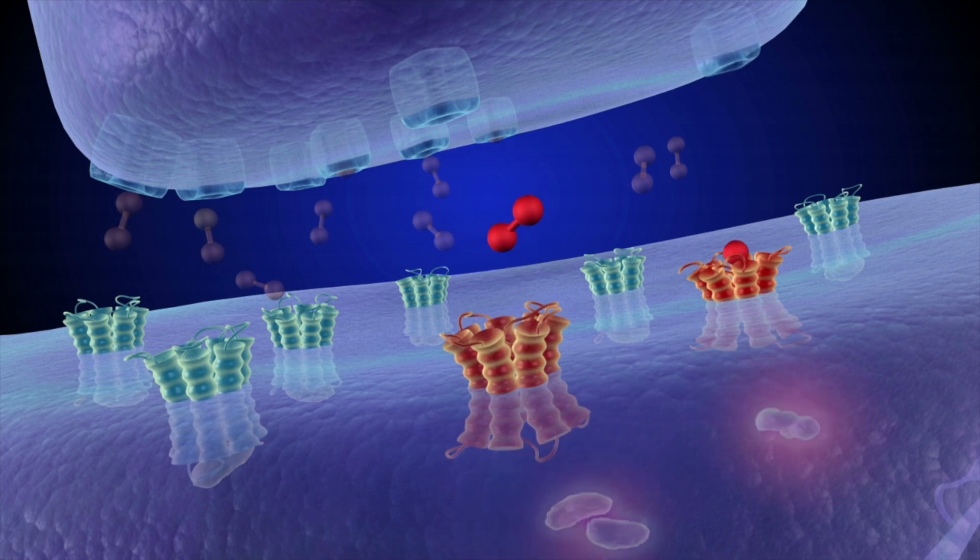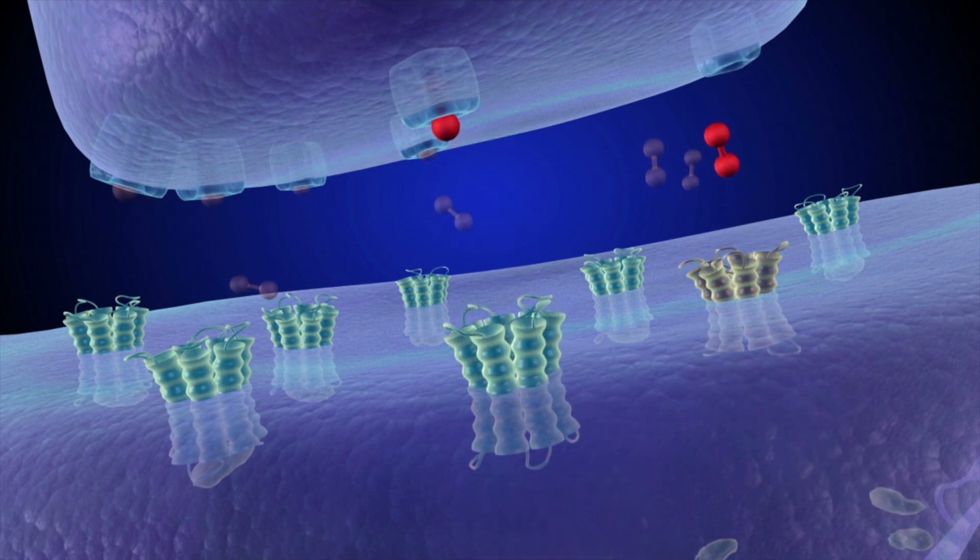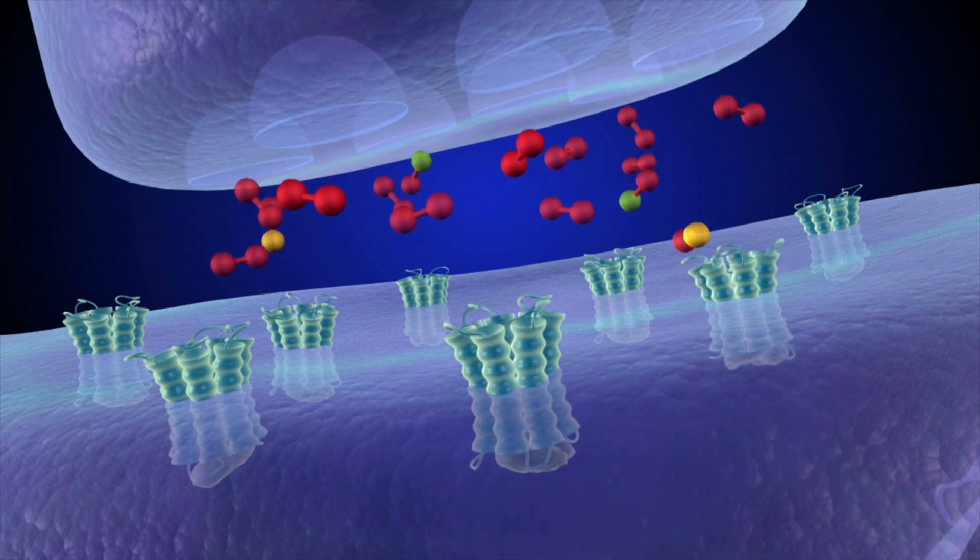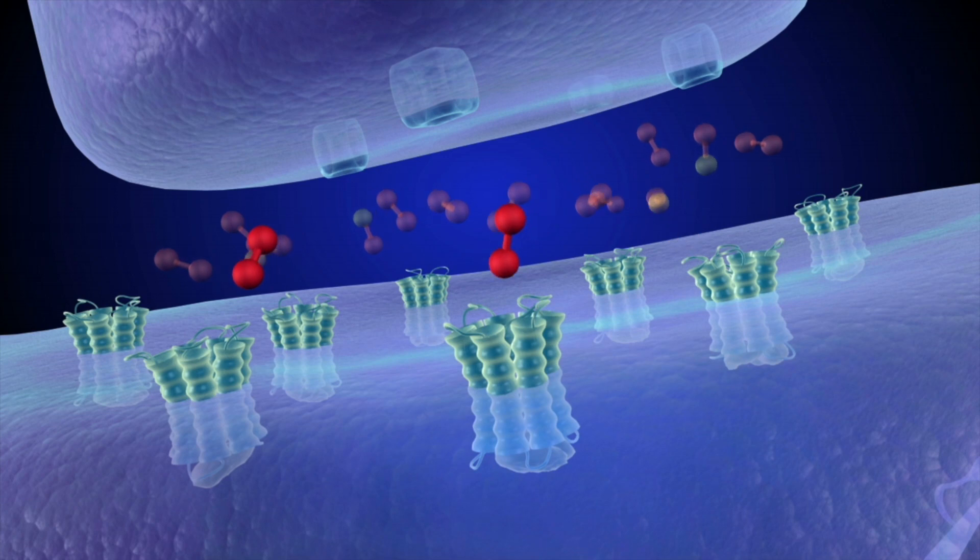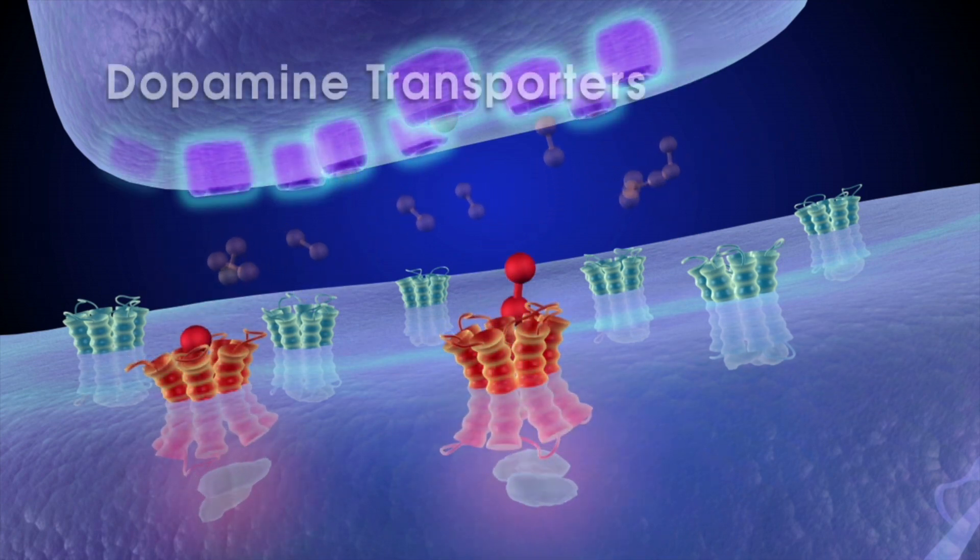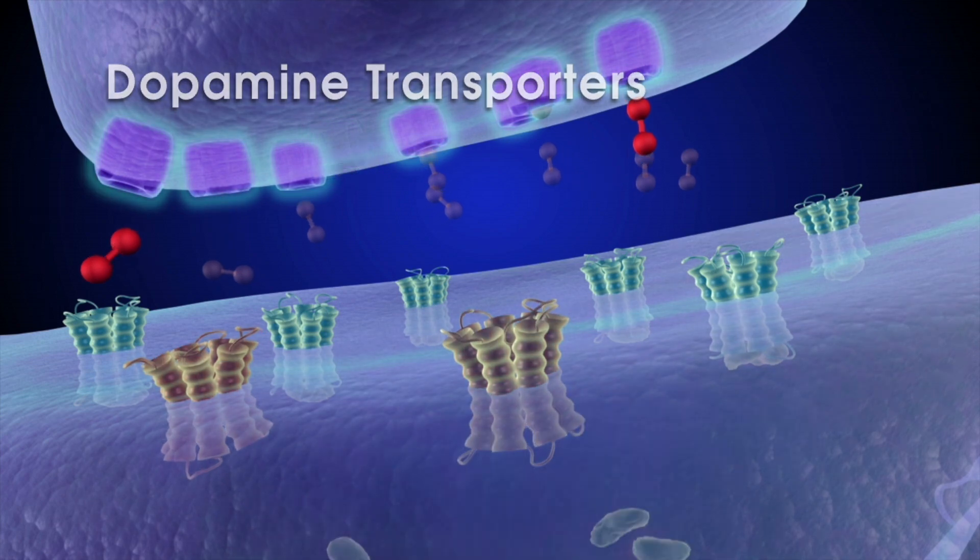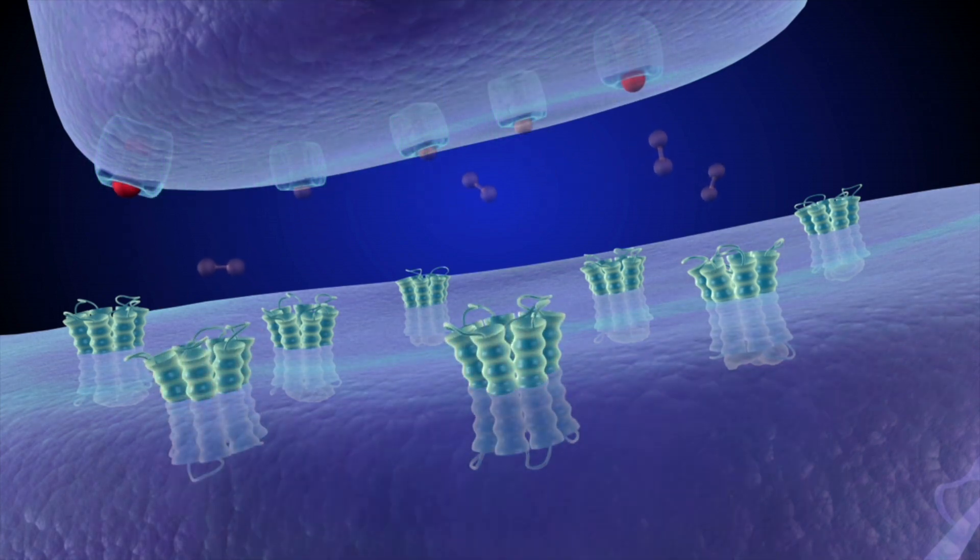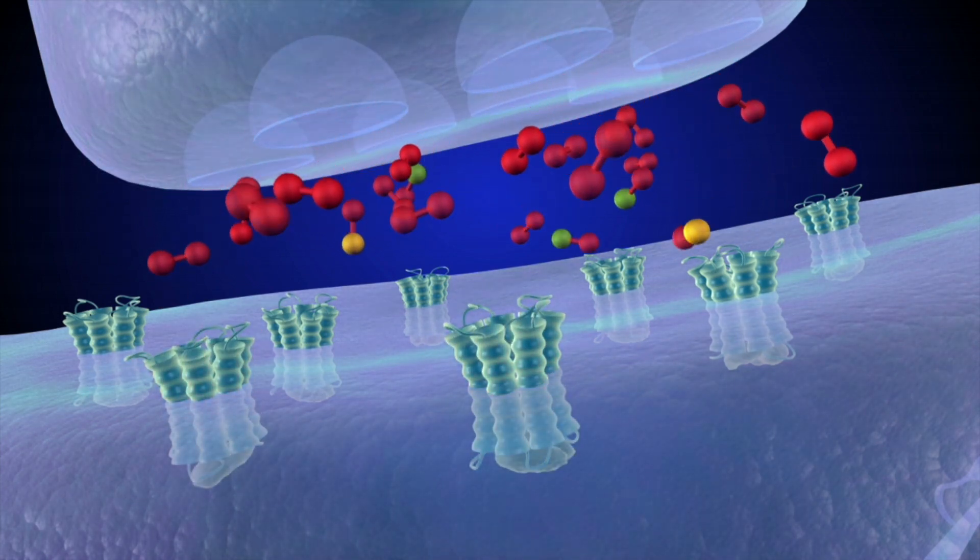When dopamine binds to the exterior of the dopamine receptor, this causes proteins attached to the interior part of the receptors to carry the signal onward within the cell. Some dopamine molecules re-enter the sending cell via dopamine transporters and can be re-released when a reward is encountered.